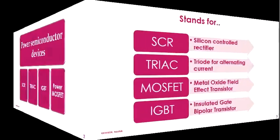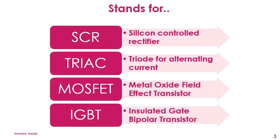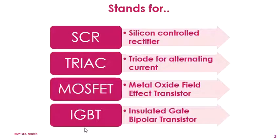Let's start with the comparison by looking at what these names stand for. The first one, SCR, stands for Silicon Controlled Rectifier. TRIAC is nothing but Triode for Alternating Current. MOSFET is Metal Oxide Field Effect Transistor. And IGBT is nothing but Insulated Gate Bipolar Transistor. These are the full forms of these four semiconductor devices.